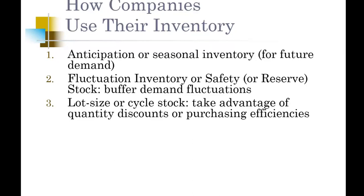Another inventory type is cycle stock or lot size. Lot size inventory can be equated to case quantities — for example, cases of sodas. Instead of buying an individual soda, organizations buy case quantities, and those case quantities lead to quantity discounts. They also lead to increased efficiencies from an inventory handling and counting perspective. When we talk about cycle counts and periodic counts, we'll discuss that in more detail.